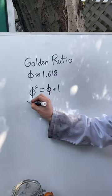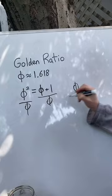So why don't we divide both sides of this definition by the golden ratio? Now we get golden ratio equals one plus one over the golden ratio.